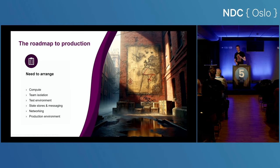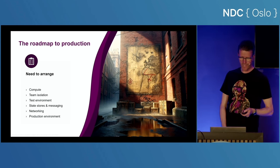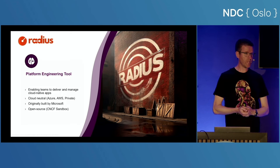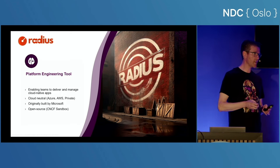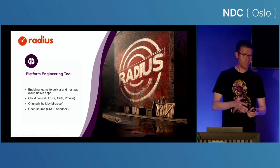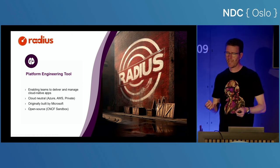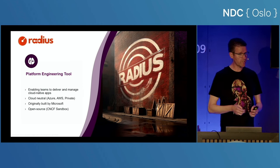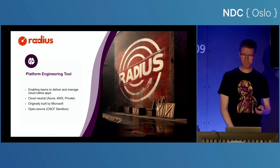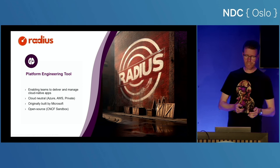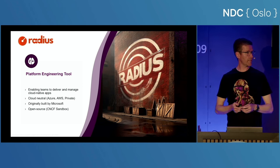So I was talking about a roadmap into production. Radius, in my mind, is a platform engineering tool. It will enable product teams across the world to deliver software into production at a quick rate. It aims to be cloud neutral — it can manage Azure resources and also AWS resources, and in the future will add GCP support. It's also fine to run Radius in your private cloud or on your laptop. Originally built by an incubation team at Microsoft, it is now open source and a CNCF sandbox project, meaning anyone can contribute to Radius.